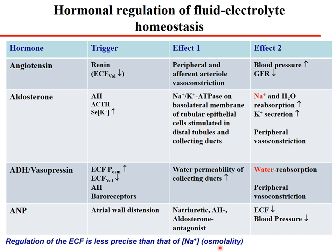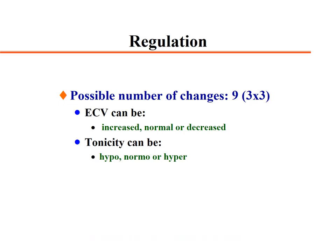Regulation of extracellular fluid is less precise than osmolarity regulation, and osmolarity is directly connected to serum sodium concentration. There are about 9 possible states combining changes in extracellular volume (increased, normal, decreased) and tonicity or osmolarity (hypo, normal, hyper).